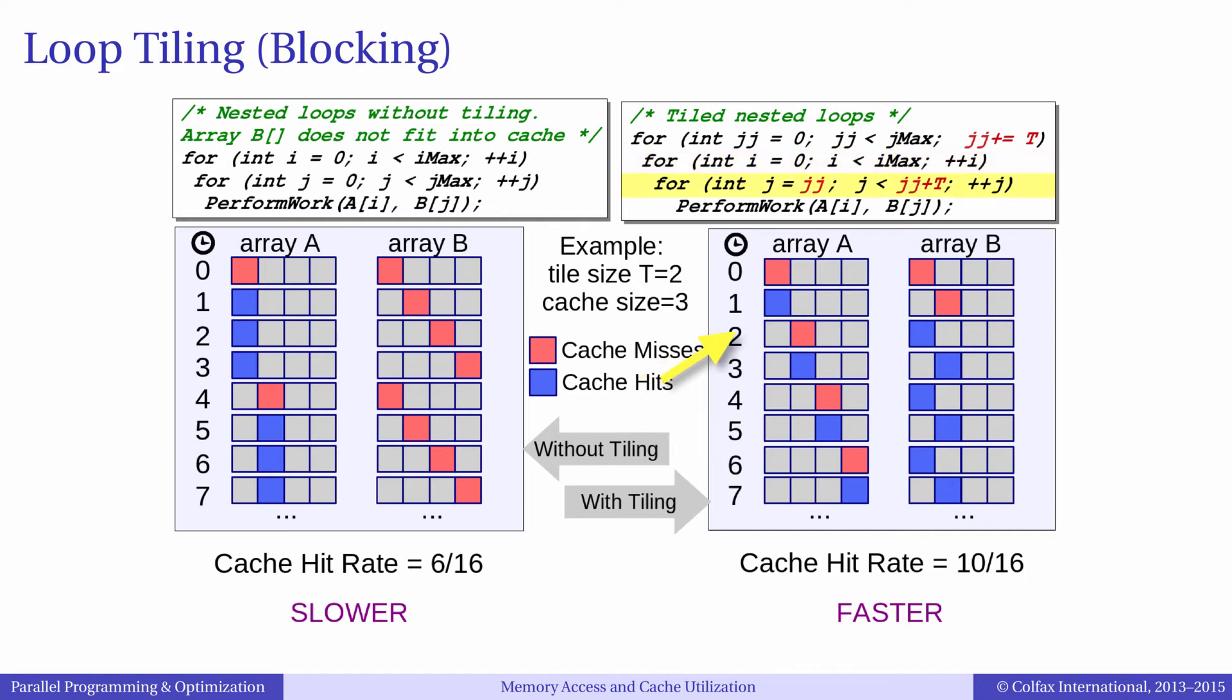But in the next iteration, instead of going further in j, we reset j to 0 and increment i. We have a miss on A[1], but what about B[0]? We have only read three elements into the cache, so B[0] is still there, and we have a cache hit. In the next iteration, both A[1] and B[1] are hit. And this pattern goes on. You can count the red and the blue squares to see that this algorithm hits the cache 10 out of 16 times.